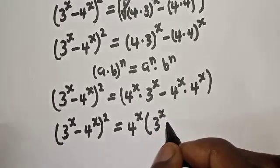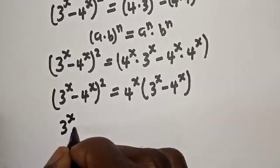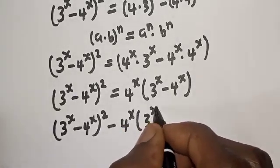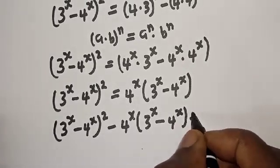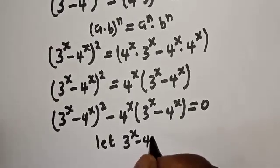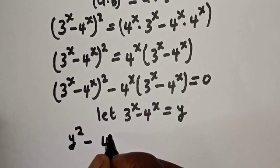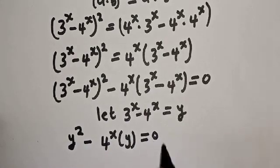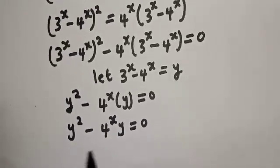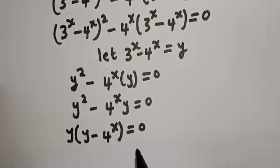Now let's bring this to this side. We have 3 raised to power s minus 4 raised to power s, squared, minus 4 raised to power s bracket 3 raised to power s minus 4 raised to power s, everything equal to zero. Now let's let 3 raised to power s minus 4 raised to power s equal y. We have y squared minus 4 raised to power s bracket y equals zero, which is y squared minus 4 raised to power s times y equals zero. y is common; let's bring it out: y bracket y minus 4 raised to power s equals zero.